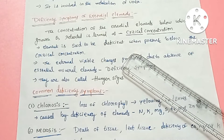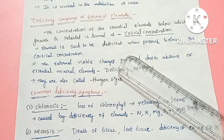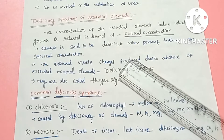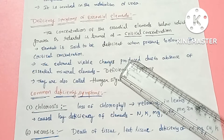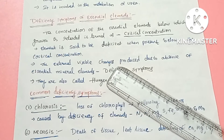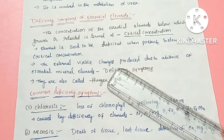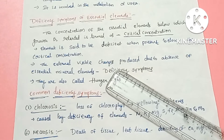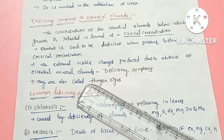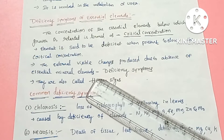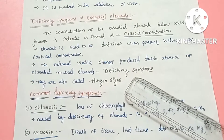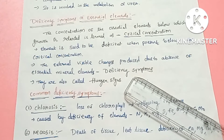If a plant has a deficient element, it shows abnormal visible changes. If you are able to find visible changes caused by element deficiency, those visible changes are called deficiency symptoms. These are also known as hunger signs.